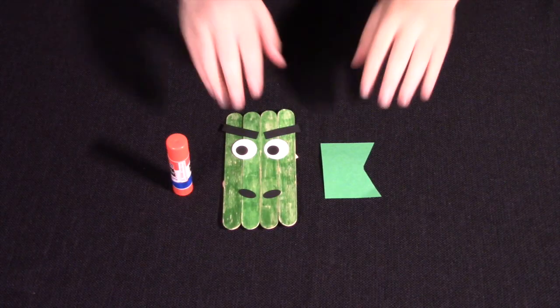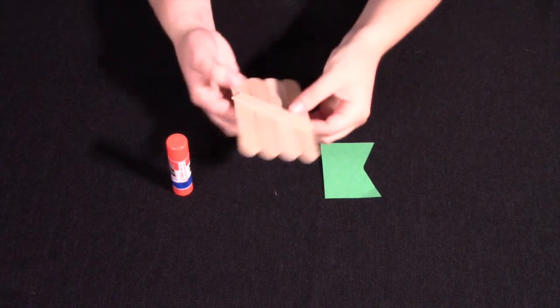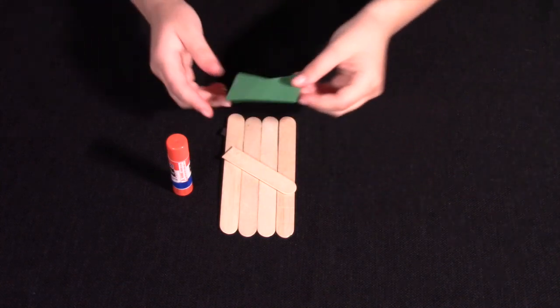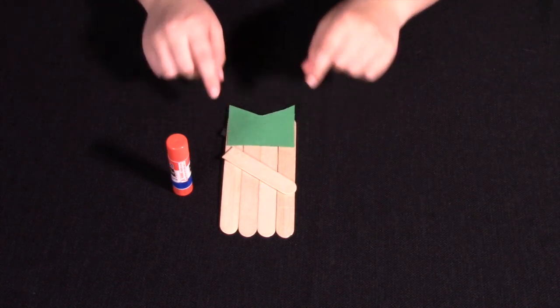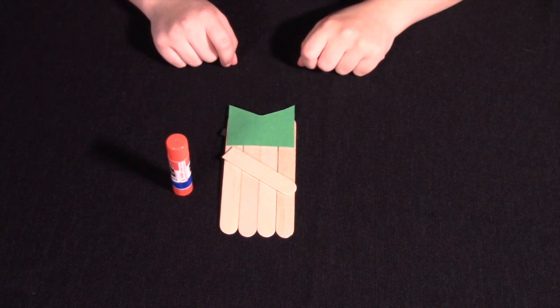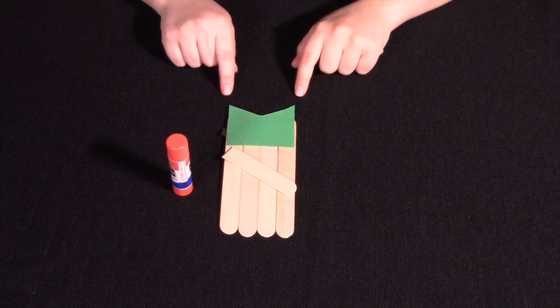Step 3. Flip over your dragon head and glue down the green piece of paper, pointy parts on the top. These will be your dragon's ears, so make sure the pointy ends are showing when you flip it back over.